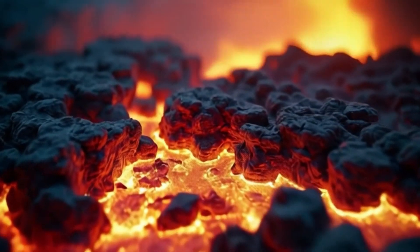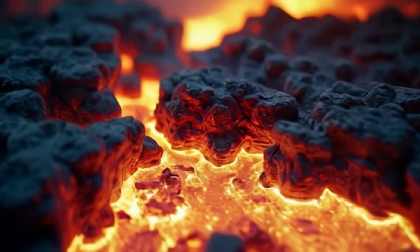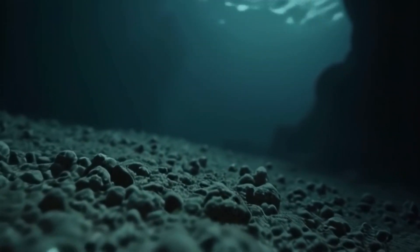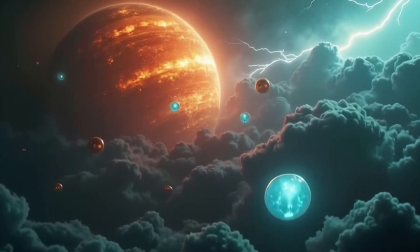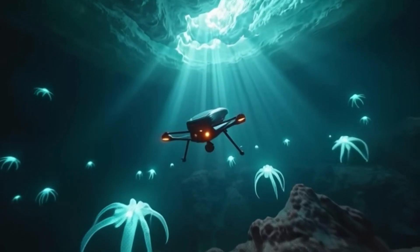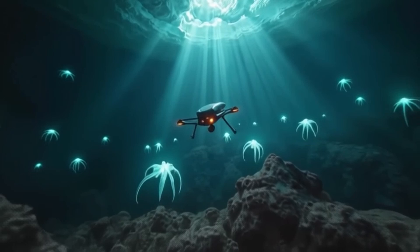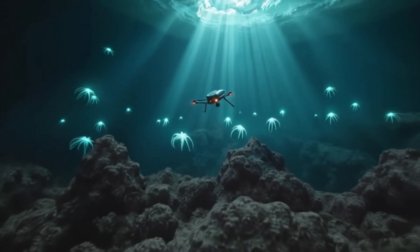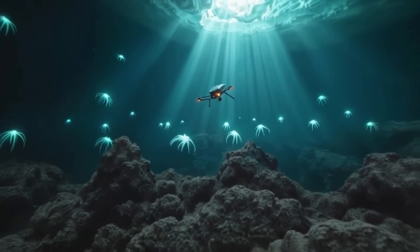On Earth, life thrives in searing volcanic vents, frozen lakes, and the crushing depths of the ocean. On the gas giants of distant stars, alien creatures could float through turbulent skies. Beneath the icy crusts of moons like Europa, liquid oceans could harbor entire ecosystems, illuminating the void with their own light.